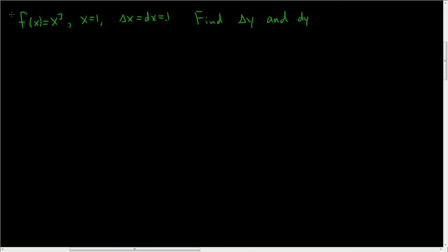We have f of x equals x cubed, x equals 1, and delta x and dx are both equal to 0.1. And we're being asked to find delta y and dy as well.